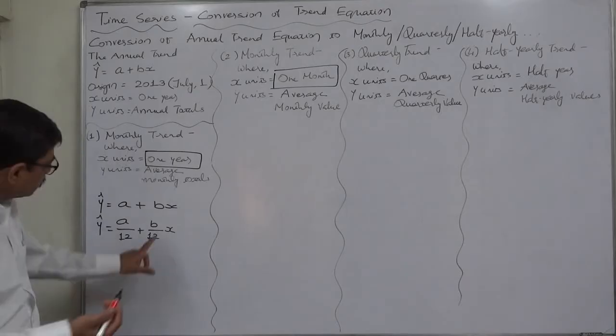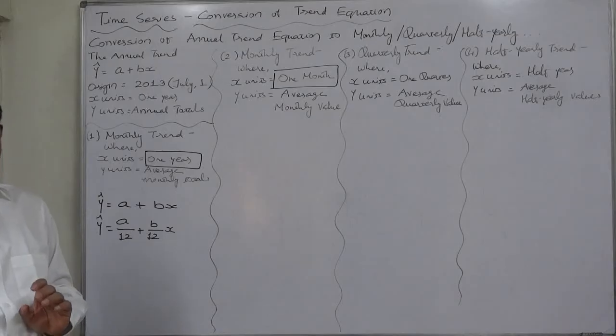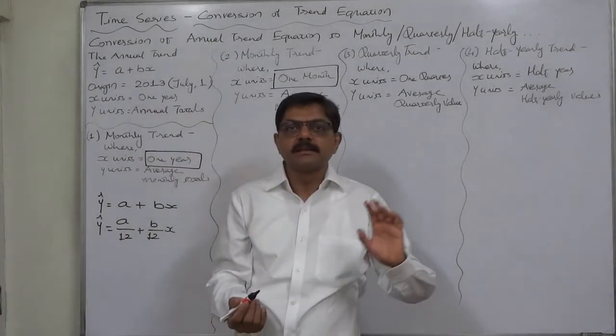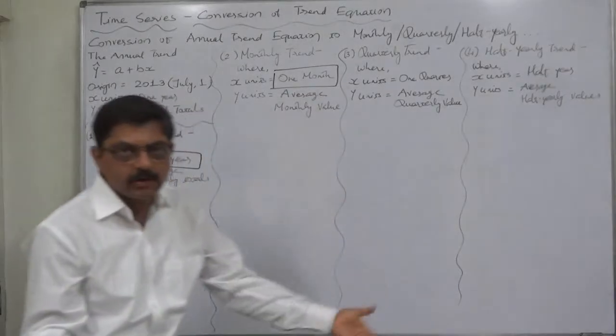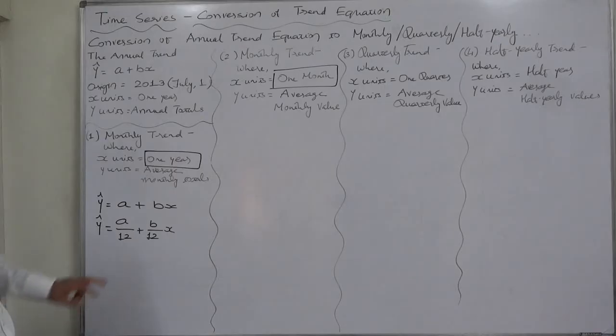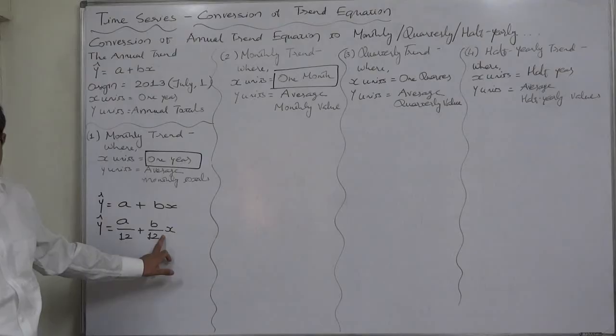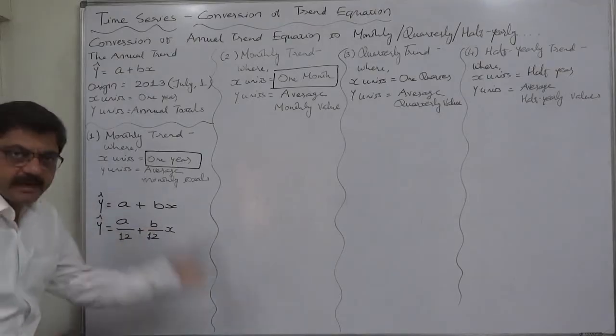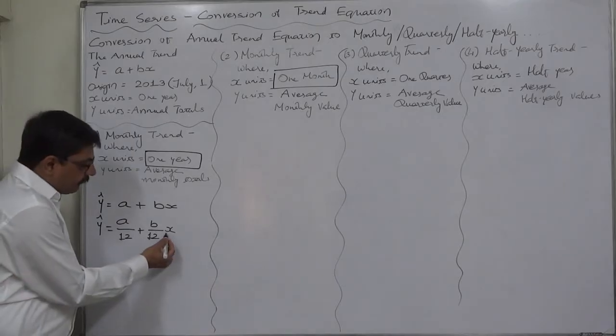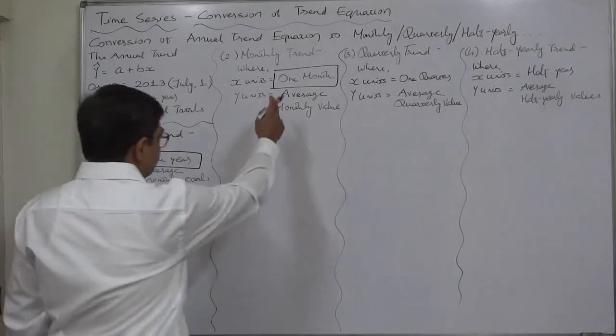But practically we want x units also a month. Then what should we do? We should divide b by further 12, so b by 12 should be divided by again 12. It is something like we have to divide this x by 12.